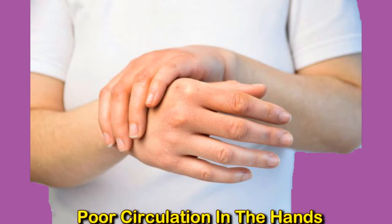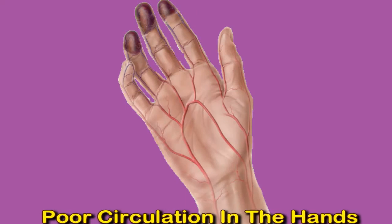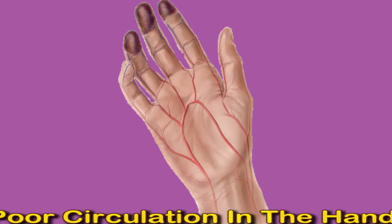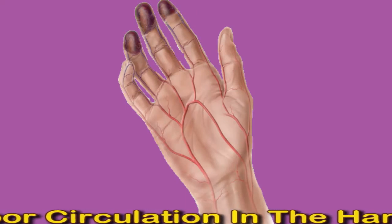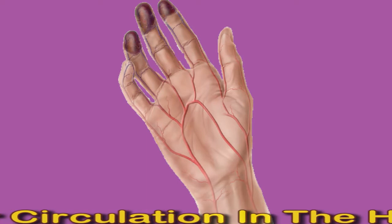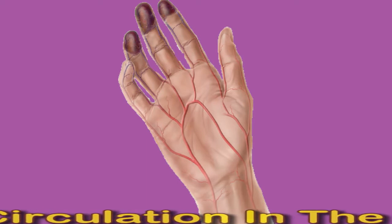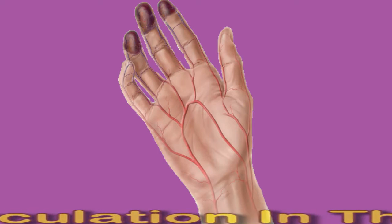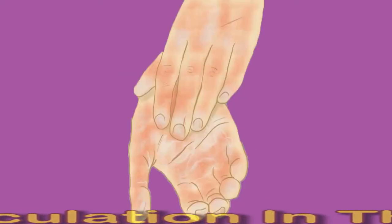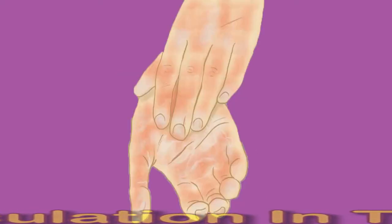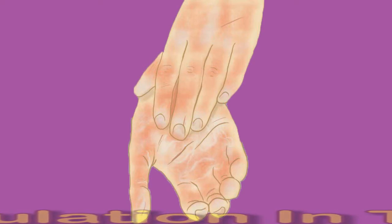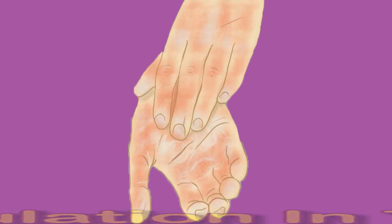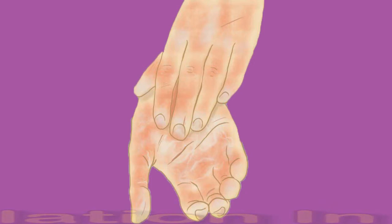Conditions that may lead to poor circulation in the hands include atherosclerosis, anemia, and Raynaud's disease. Smoking may also increase the likelihood of poor circulation. In this video, we will examine the symptoms and causes of poor circulation in the hands, as well as potential treatments and how to improve circulation.